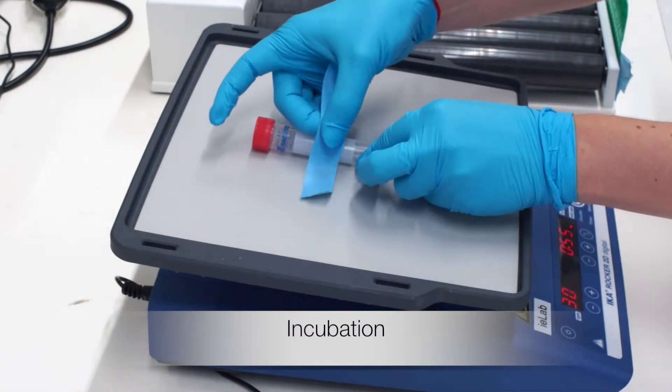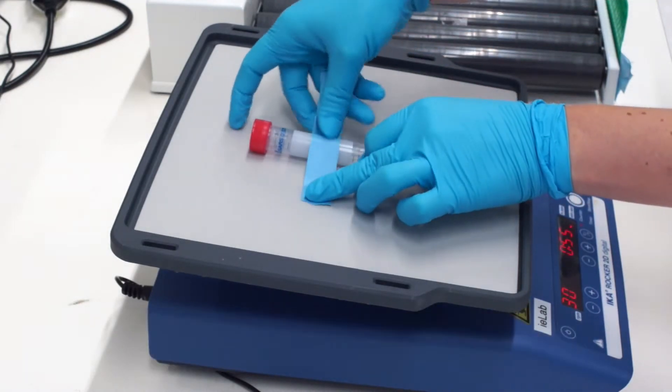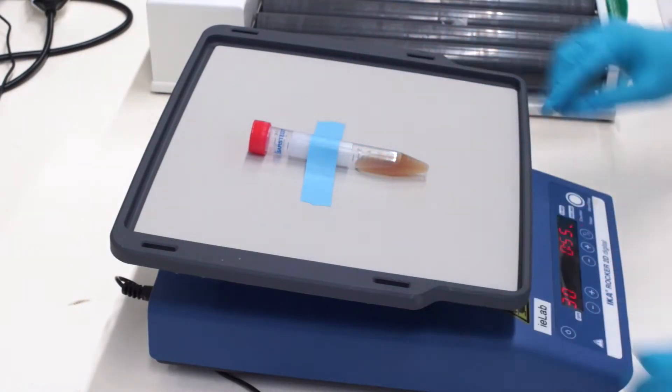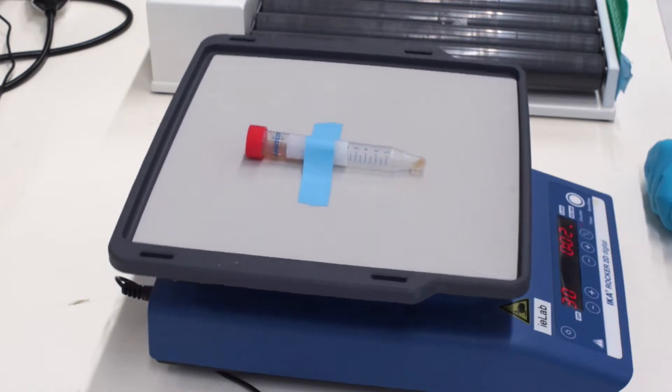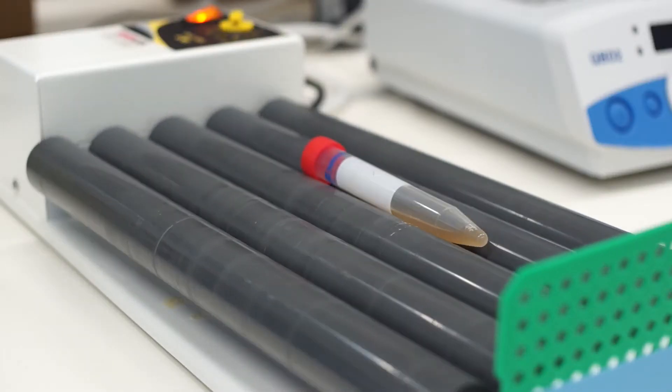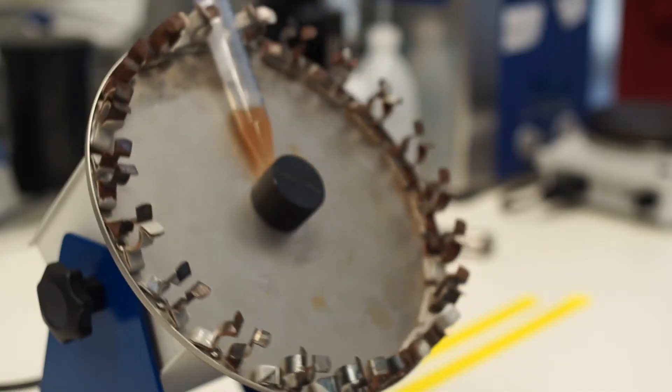Then I incubate the sample for 30 minutes at room temperature so the antibodies can bind to the target cells. The tube should be gently rocked during this incubation. Like this, or like this, or also like this.